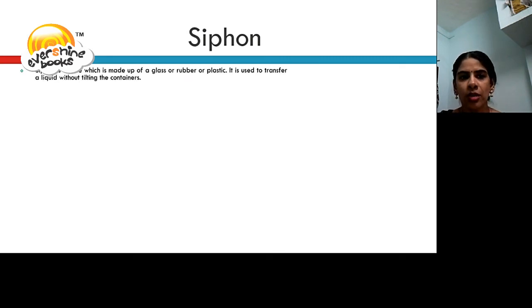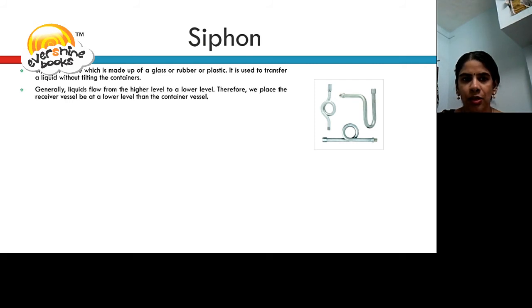Siphon. Siphon is a tube which is made of glass, rubber or plastic. It is used to transfer a liquid without filtering the containers. Generally, liquids flow from higher level to a lower level. Therefore, we place the receiver vessels at the lower level than the container level.